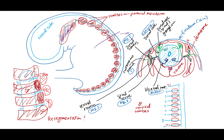During resegmentation, the cranial half of the C1 sclerotome ends up getting incorporated into the base of the skull. So the bottom half of the C1 sclerotome and the top half of the C2 sclerotome will end up fusing with each other to form the first cervical vertebra. Likewise, the second cervical vertebra will be formed by the bottom half of the C2 sclerotome and the top half of the C3 sclerotome, and so on and so forth in vertebral column formation.